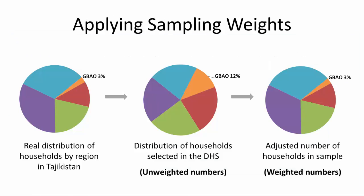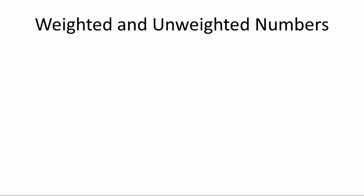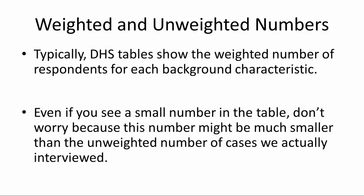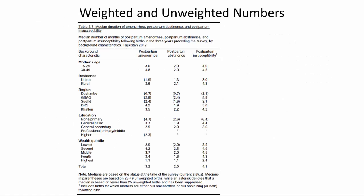To recap: after applying weights, we have a distribution that looks very much like the distribution we began with, but with the advantage that every region has a large enough sample for results to be representative at the subnational level — which may not be true for a sample with proportional allocation. Many people worry about small sample sizes, but that refers to the unweighted number of respondents, which are generally not shown in DHS tables. Most DHS tables show weighted numbers, and even if a weighted number appears small, the unweighted number of cases actually interviewed may be much larger.